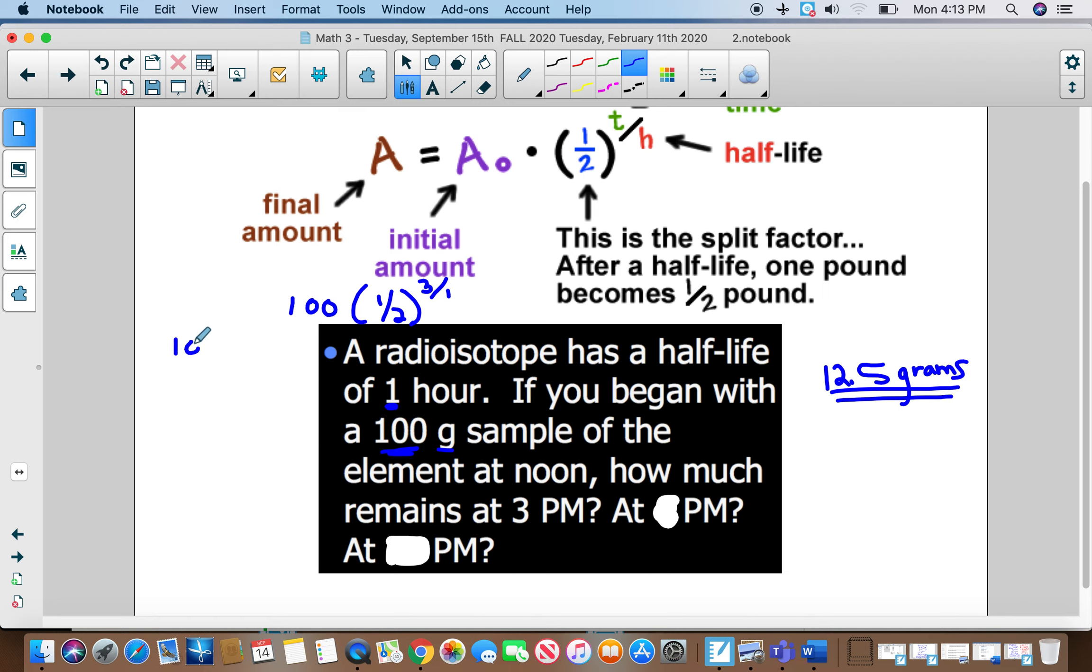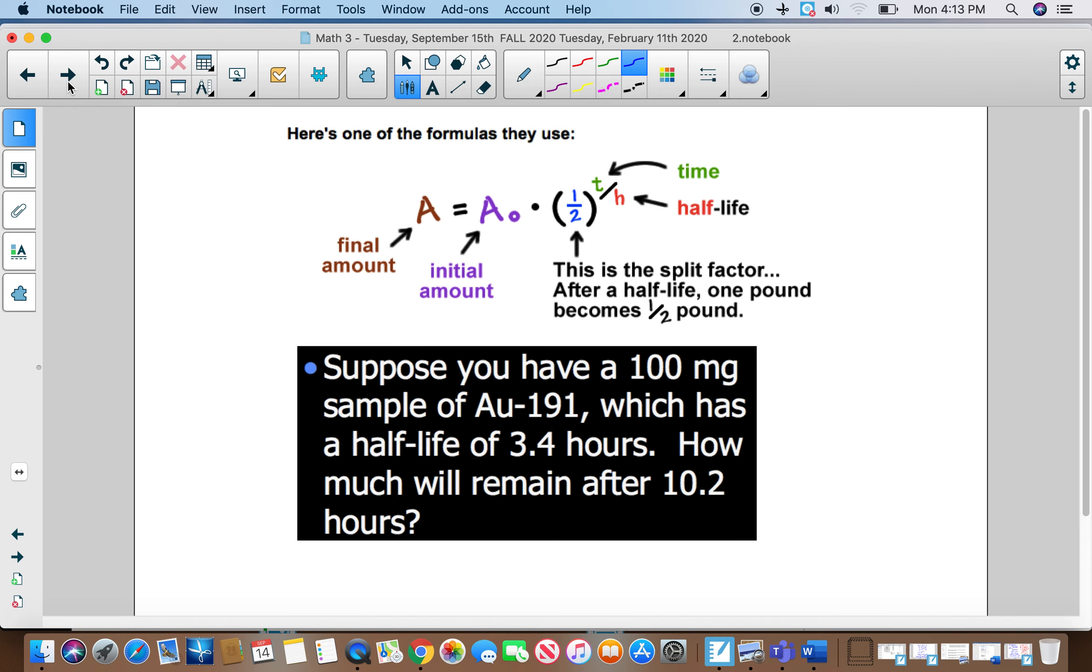Now a lot of these you can do in your head right now, because you're going to do 100. If we divided that by half, that would be 50. That would be my first time. If I did it again, I'd get 25. Then if I did it again, I'd get 12.5. So some of these, I realize you do not have to use your formula, but I do want to see it. I want you to kind of get used to it.